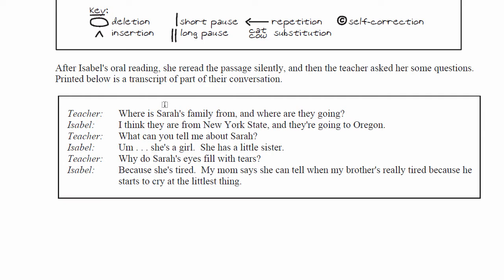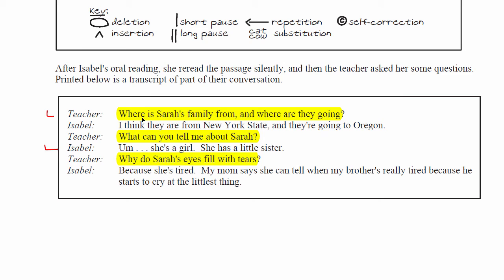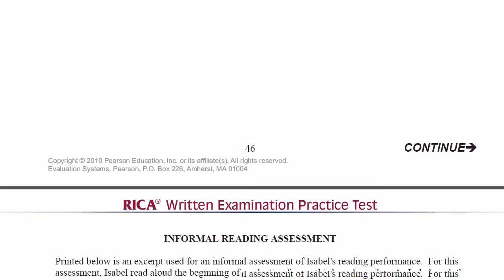Don't skip the data — do read through it. When you do, you should see that this is a literal question: where is Sarah's family from and where are they going? That is literal. What can you tell me about Sarah? Also a literal comprehension question. Here's your inferential question: why do Sarah's eyes fill with tears? Isabel says because she's tired — her mom says she can tell when her brother's tired because he cries. That's the inferential question, and you'll find she lacks inferential comprehension.